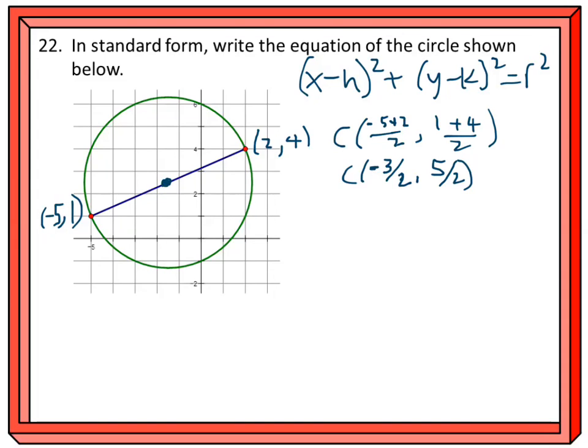Now I need the radius. To find it, I'll find the length of the diameter and then half it. I don't have to remember the distance formula—I can just use the Pythagorean theorem. I'll draw a right triangle here.